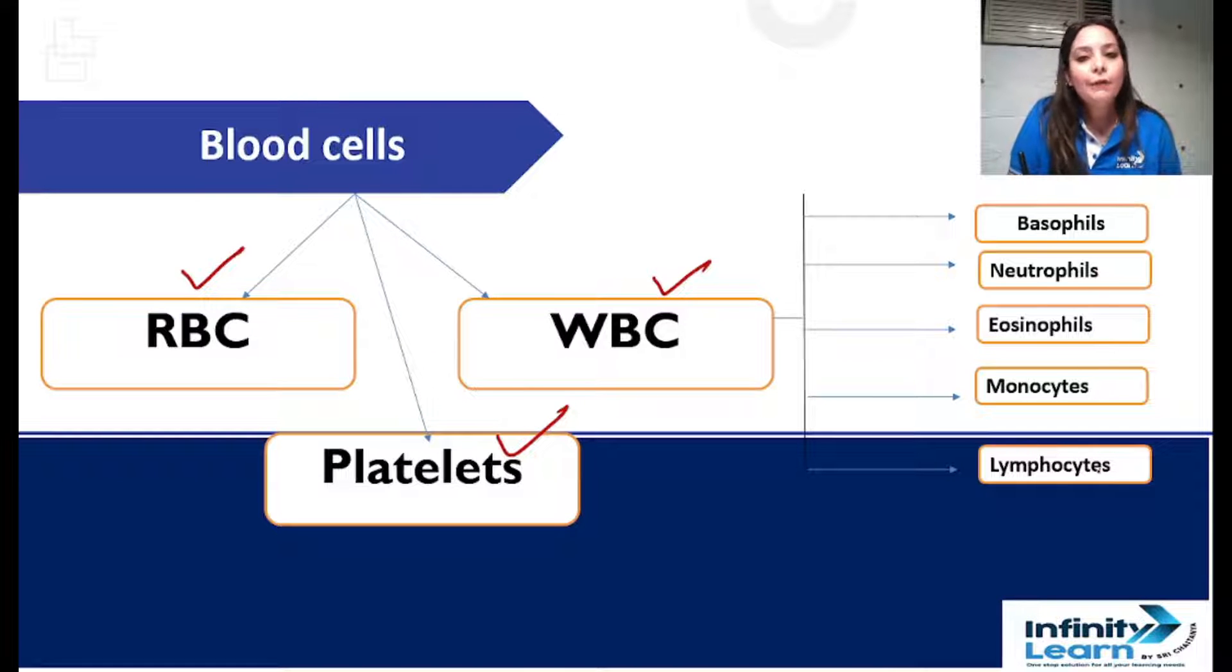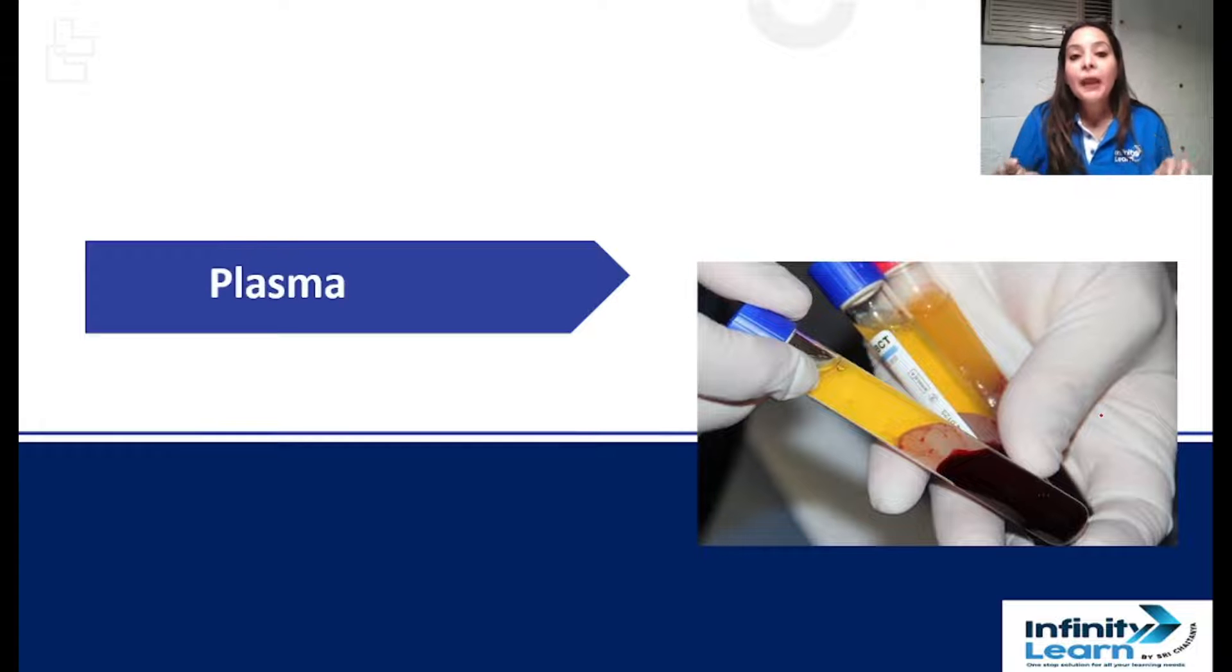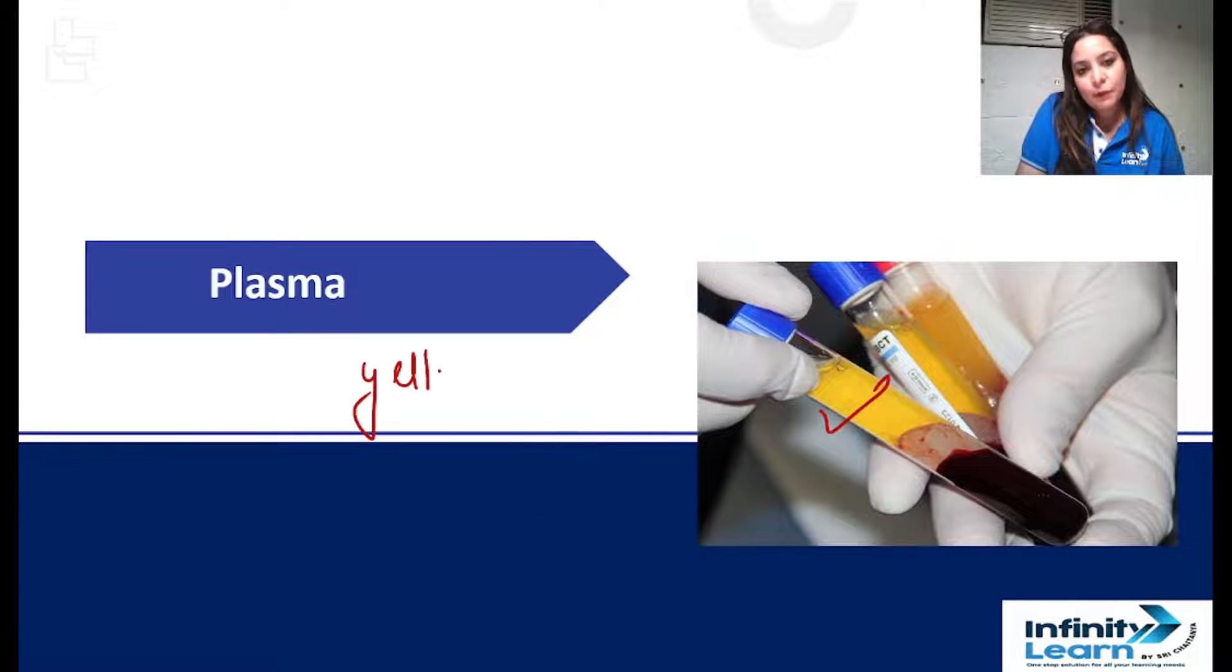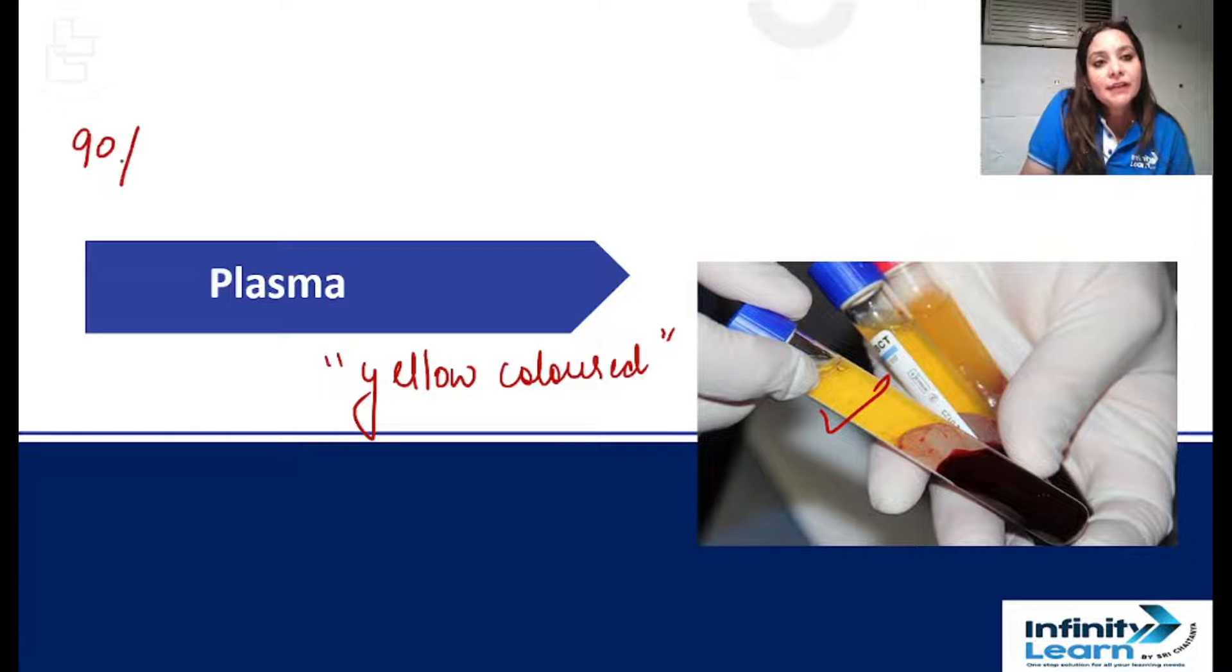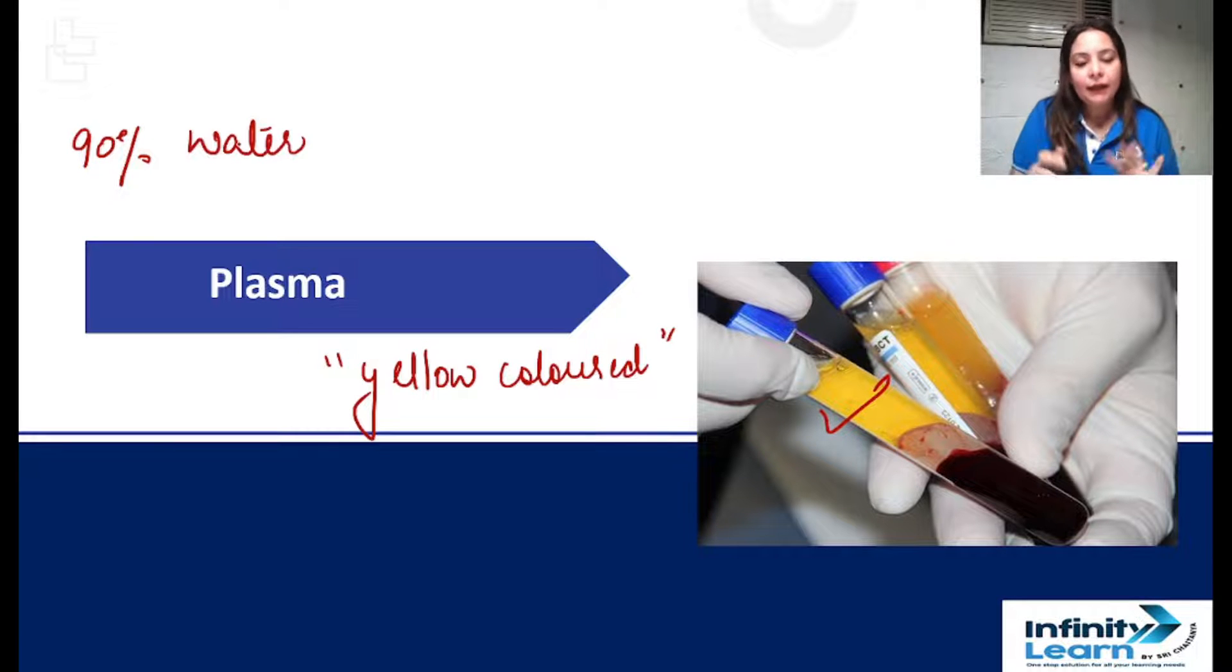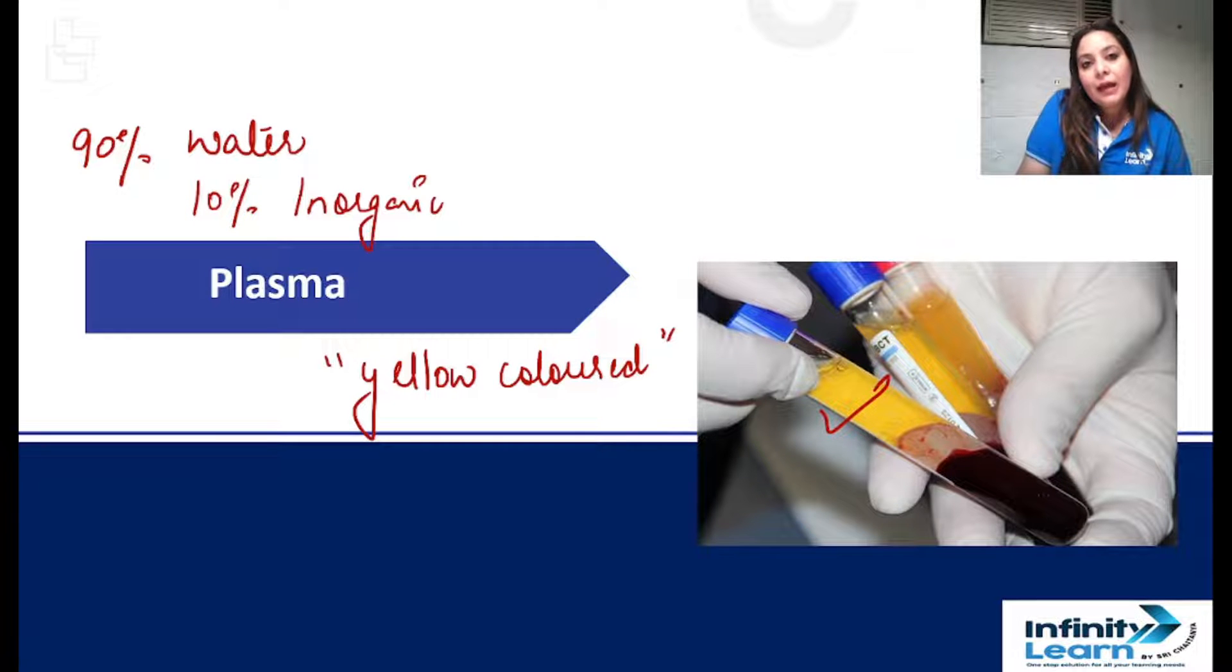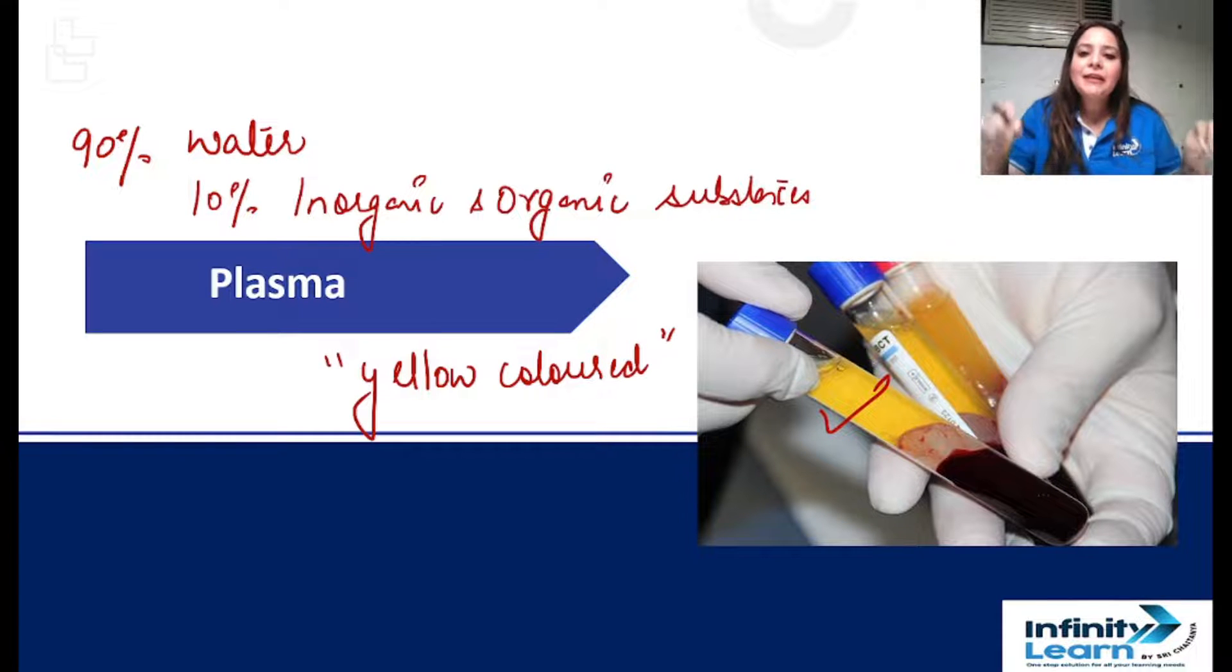So let's begin with plasma first. Now how do you see plasma? Look, as you can see in this picture, this yellow colored fluid is called plasma. This yellow colored fluid which you can see is plasma. This is how it looks like. Now what is it made of? 90% it has water in it and 10% is inorganic and organic substances.